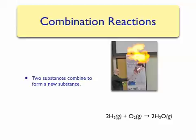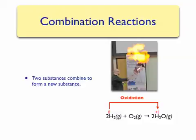In the water formation reaction, hydrogen goes from having a zero oxidation number to having a plus one oxidation number, meaning that hydrogen is oxidized. Those electrons lost by hydrogen are picked up by oxygen, causing a change from a zero oxidation number to a minus two oxidation number. This means that oxygen was reduced.